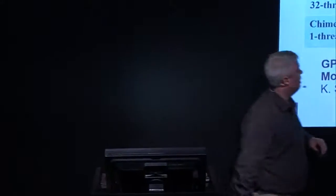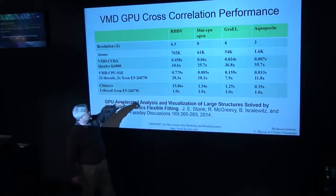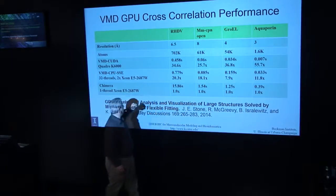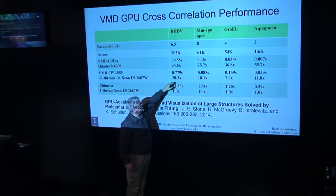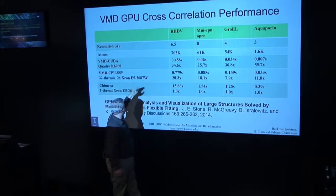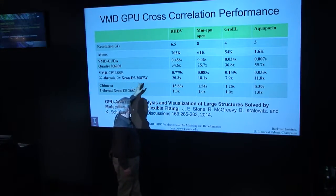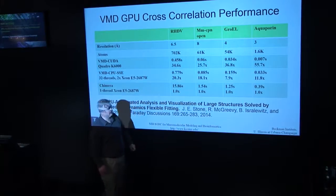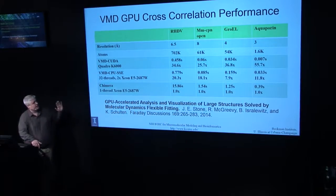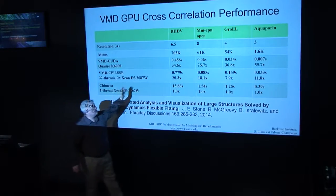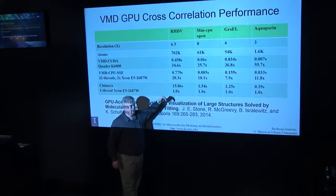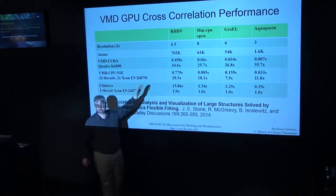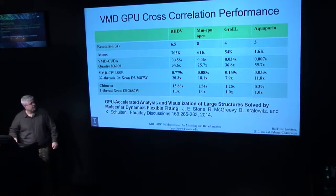The GPU-accelerated version of the algorithm is more than 34 times faster than the previous best program. We also made a CPU version that took a similar approach, and on a dual-socket Xeon E5 — one of the fastest Xeons available — one GPU is still about one and a half times faster. We took something that took almost a minute for structures of 700,000 atoms or less and crushed that time down to half a second. What used to take a minute or two is now a click of a button.